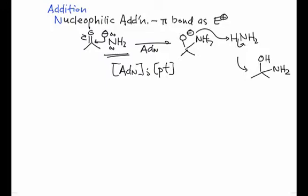The ultimate final product corresponds to the addition of the elements of H and NH2, or NH3 in sum, across the CO pi bond. That's nucleophilic addition because the reagent is a nucleophile. The common sequence of steps here is nucleophilic addition followed by proton transfer, and there may be a preceding proton transfer if the nucleophile needs to be generated first.